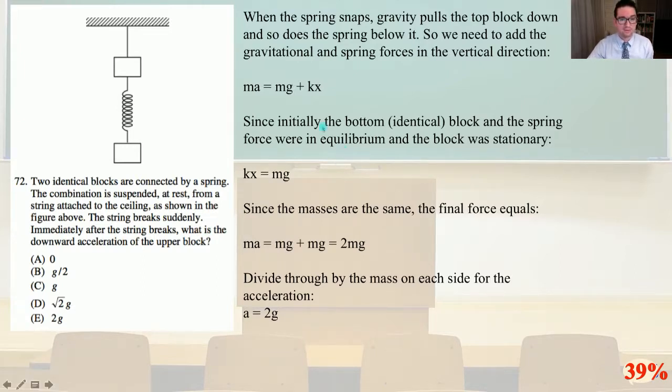MA equals MG plus KX. Since initially the bottom identical block and the spring force were in equilibrium and the block was stationary, KX has got to equal MG. Since the masses are the same, the final force equals MA equals MG plus MG equals 2MG. Divide through by the mass on each side for the acceleration. A equals 2G and that is answer E.